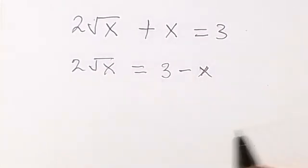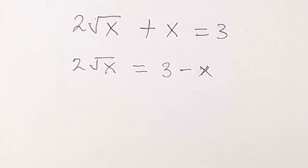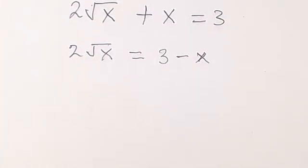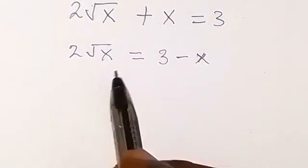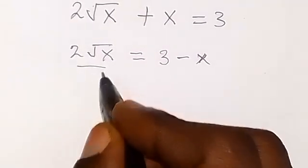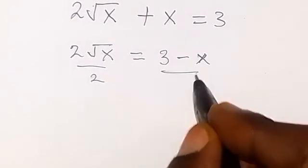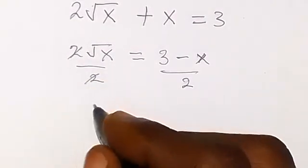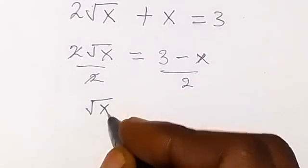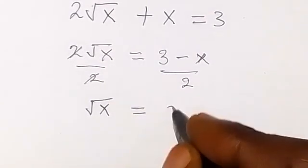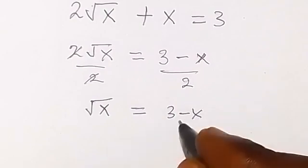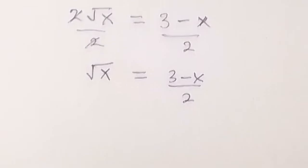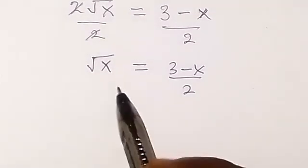When we take x to that side, plus x will become minus x. Then from there, let's divide both sides by 2. When we divide both sides by 2, the 2 cancels 2 and what we have left is √x equals to (3 minus x) all over 2.